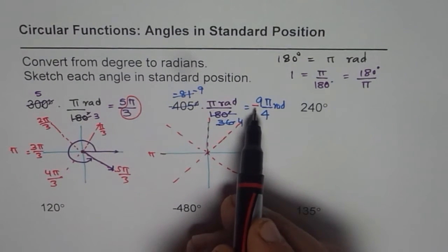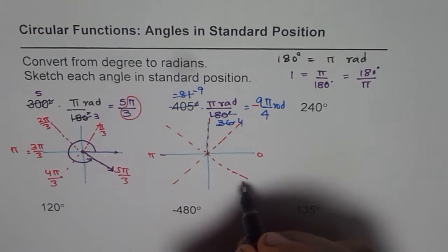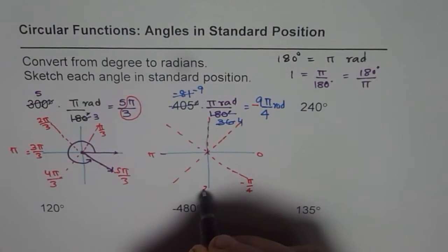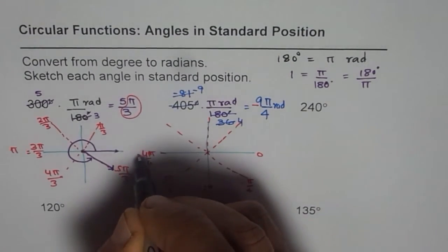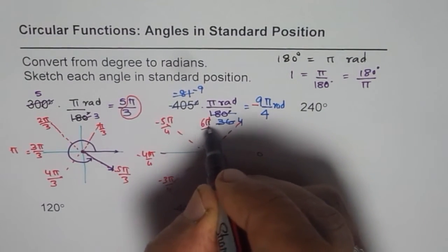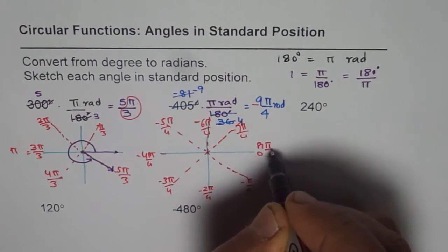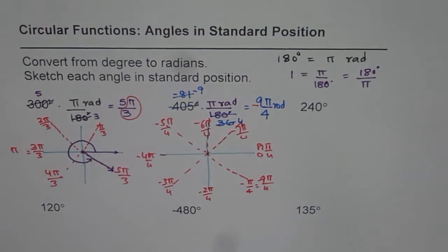We have to draw minus 9 pi by 4. Negative means clockwise direction. And 9 pi by 4, so let us count. 1 pi by 4, negative. 2 pi by 4, negative. 3 pi by 4. 4 pi by 4, negative. 5 pi by 4. 6 pi by 4. 7 pi by 4, negative. 8 pi by 4, negative. And this becomes 9 pi by 4, negative. Do you see that?